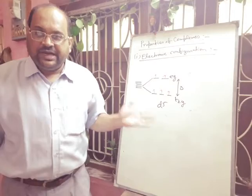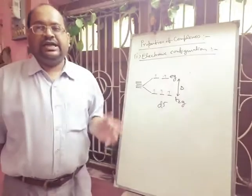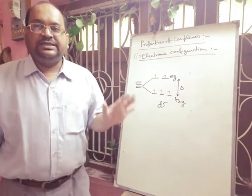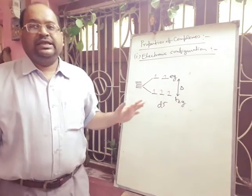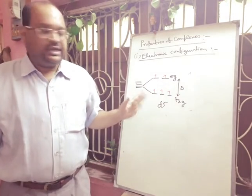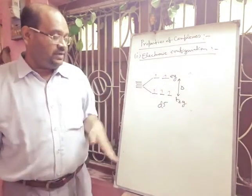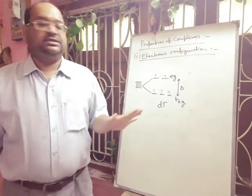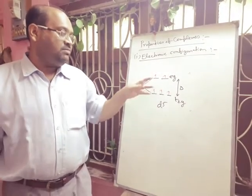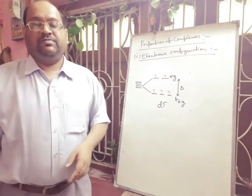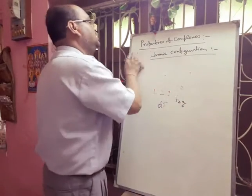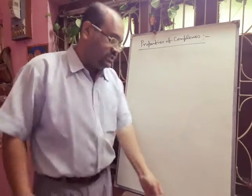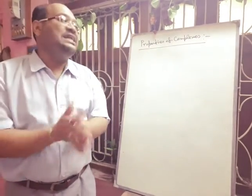If delta o is small — mainly for weak ligands like fluoride (F⁻), Cl⁻, etc. — both t2g and eg levels will be filled by single electrons with parallel spin. After filling all five orbitals singly, then pairing occurs. In a d5 system the total number of unpaired electrons is five, and this type is called a high spin complex. This covers electronic configuration of complexes using CFT theory.